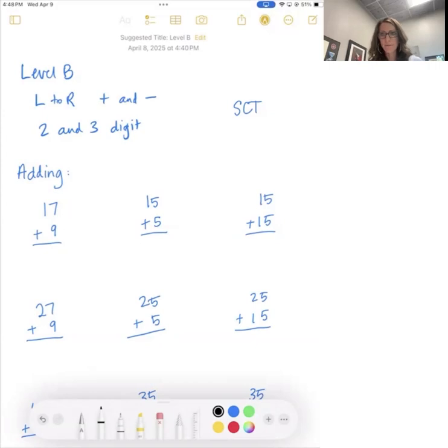I just wanted to share with y'all today some information about level B. This video is on addition in level B. The first half is addition, the second half is subtraction. The way that we work on addition is writing our answers from left to right. And I'll demonstrate that in just a minute, but I'm just going over the notes at the top. We are working on two and three digit adding and subtracting in level B.